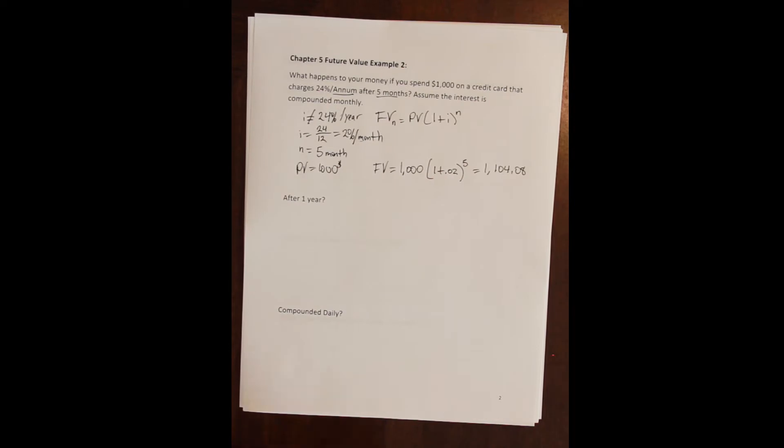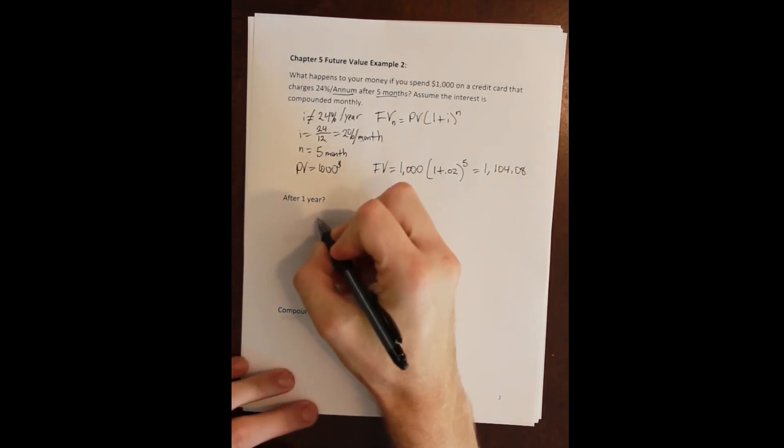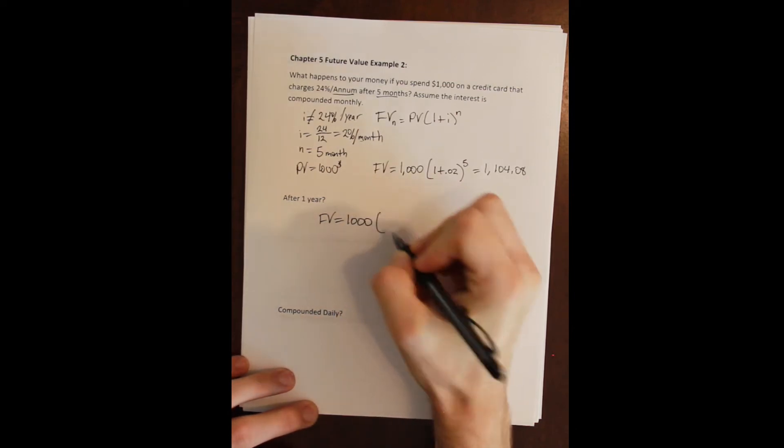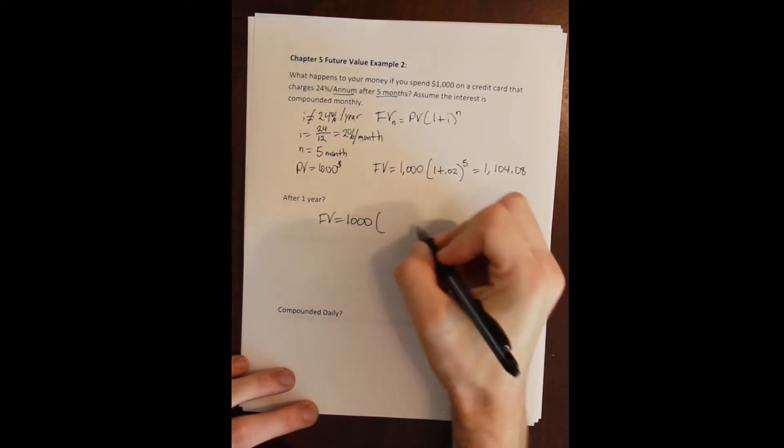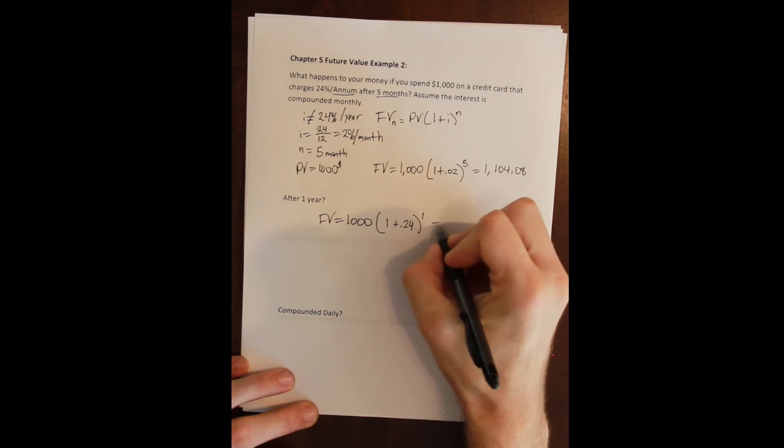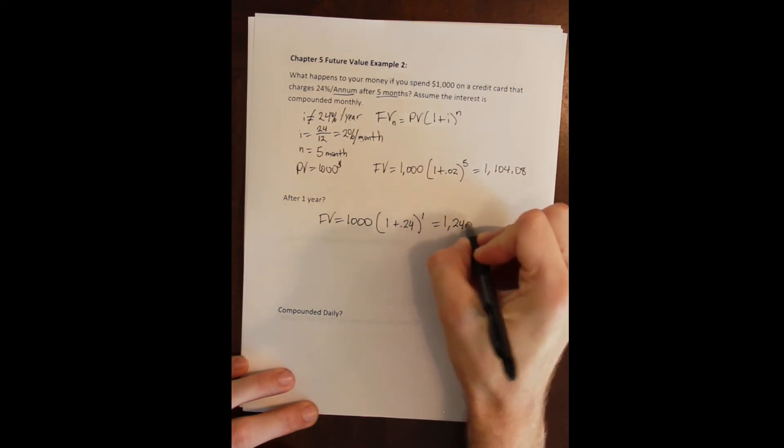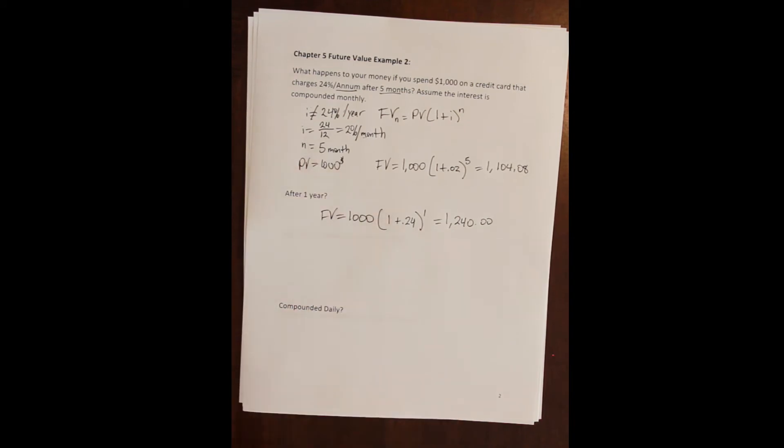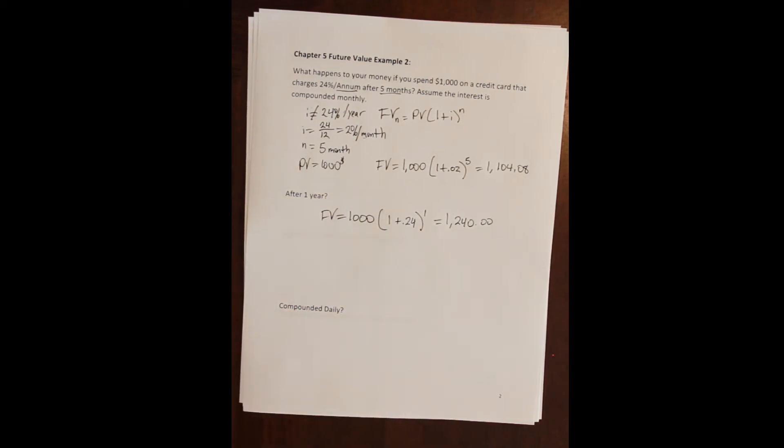Okay, so let's make it worse. What happens if for whatever reason you can't pay it off for an entire year? Well if you can't pay it off for an entire year, you leave that thousand dollars in the account for one year and we know the annual rate: so 1 plus 24 percent raised to the 1 is 1,240.